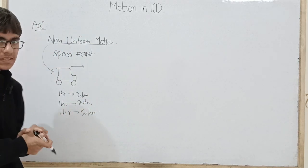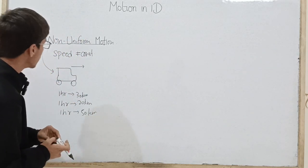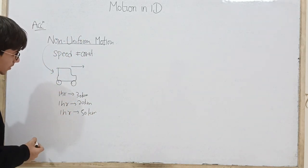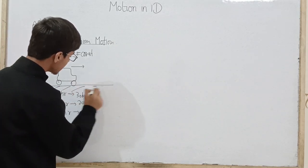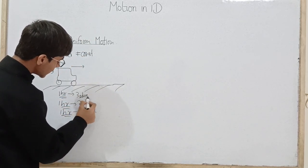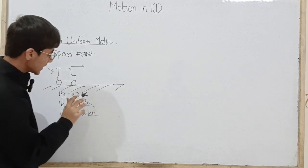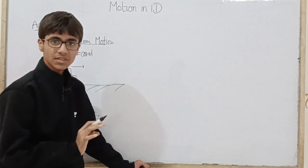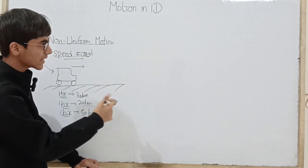So if you look at it, most of the time kya hota hai hamaari jo motion ke cases hote hain, ye non-uniform hote hain. Ki aap ke paas koi bhi object hai, woh jab move kar raha hai to obviously hamein pata hai equal time intervals mein woh unequal distances travel karta hai. That is a non-uniform motion.